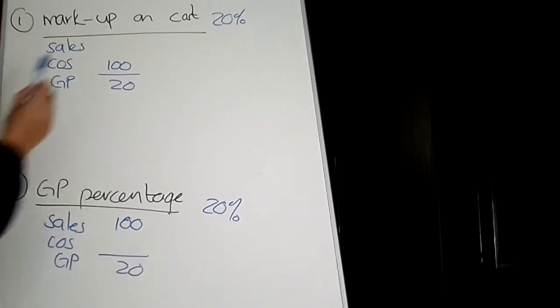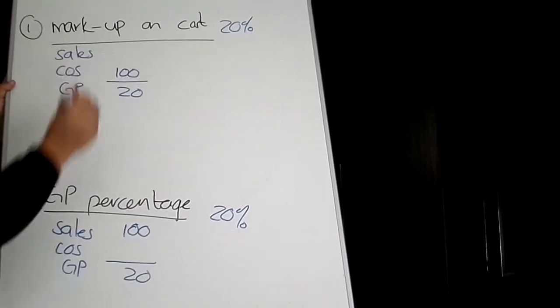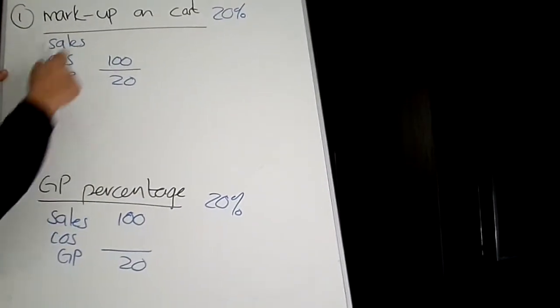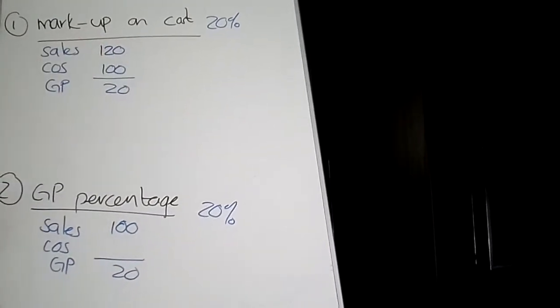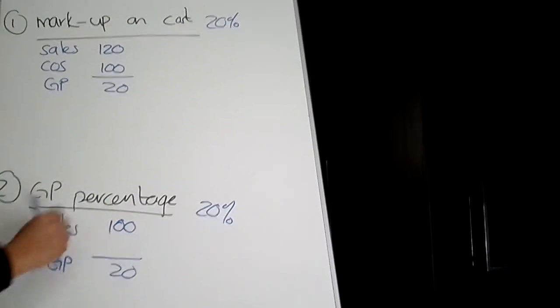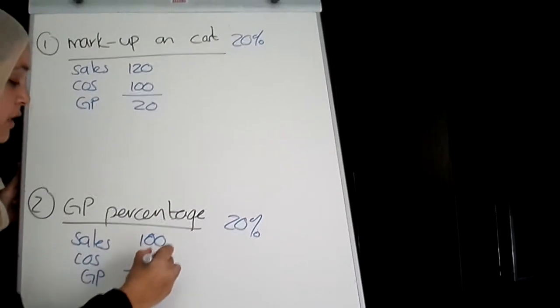The other thing which you already know is that sales minus cost of sales must give you gross profit. So now you can fill in the blank that you don't have. What minus 100 will give you 20? The answer is 120. And for the gross profit percentage, 100 minus what is going to give you 20? The answer is 80.